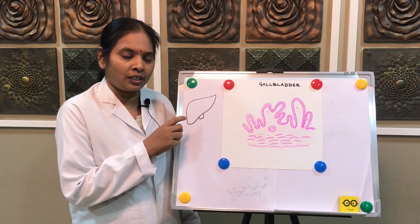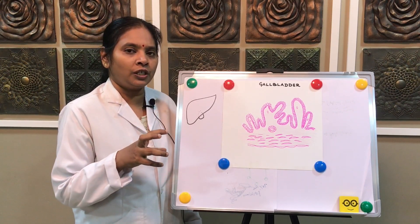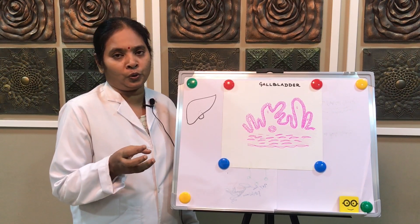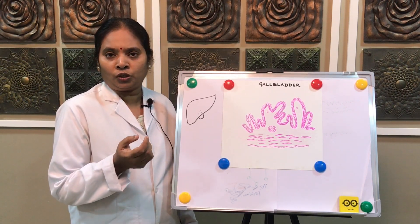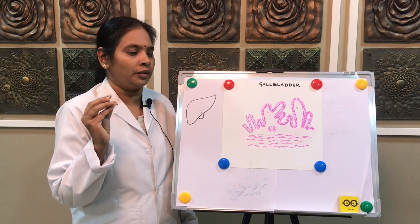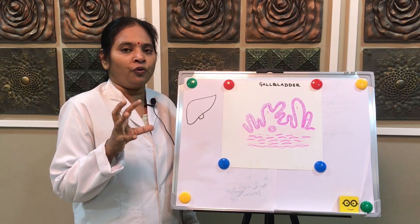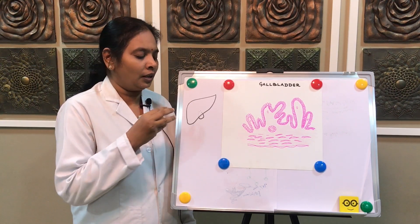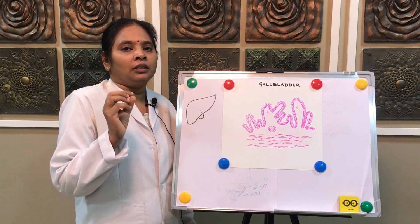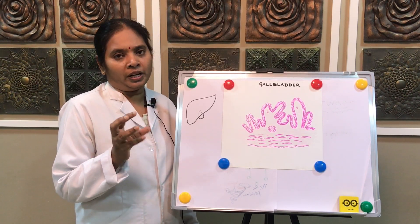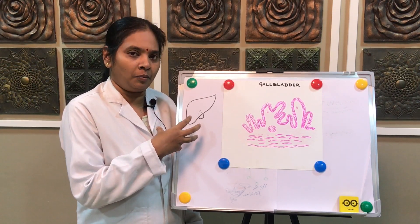The main function of the gallbladder is to concentrate the bile. Bile is rich in many chemical compounds: bilirubin, lipoprotein, lecithin, water, bicarbonate — all these chemical compounds make up the bile. So bile salts, water, bicarbonate, lecithin, and bilirubin are all present in the bile.